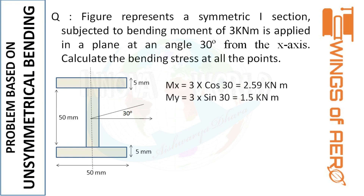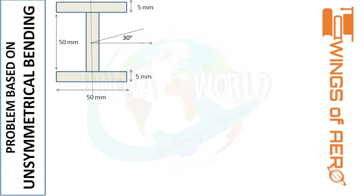When we resolve the moment in the x and y directions, we get Mx equals 2.59 kNm and My equals 1.5 kNm. This is because resolving along the horizontal gives cos 30 and along the vertical direction gives sin 30, so we multiply by cos 30 and sin 30 respectively.